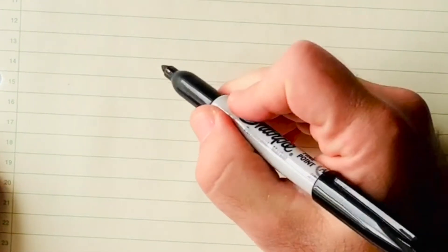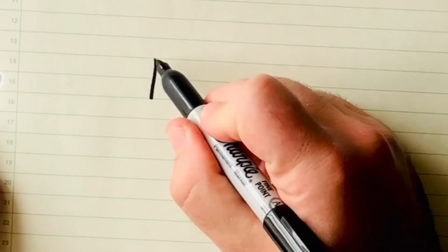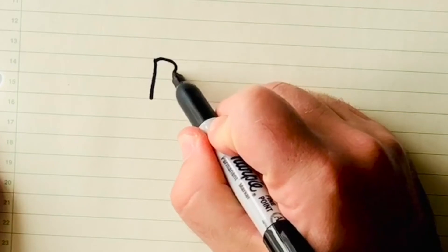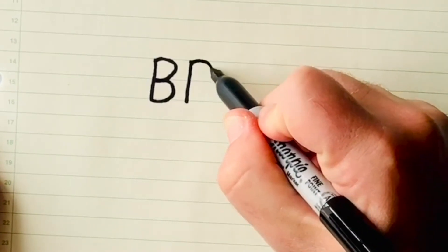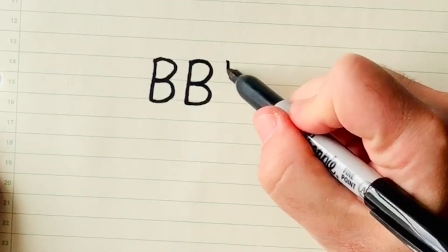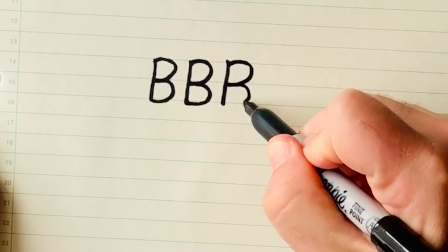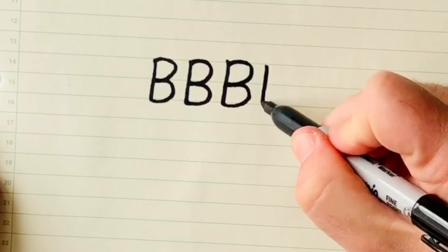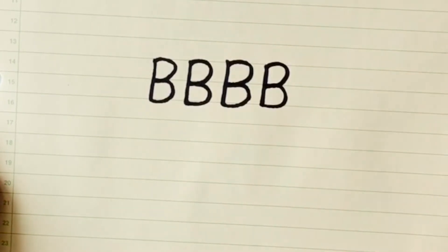Let's try doing a few capital B's. First we need to go down, and then we need to do a couple of bumps — one, two. B. Let's try it again: down, and then some bumps. B. Down, and a couple of bumps — one, two. Down, one, two. Awesome.